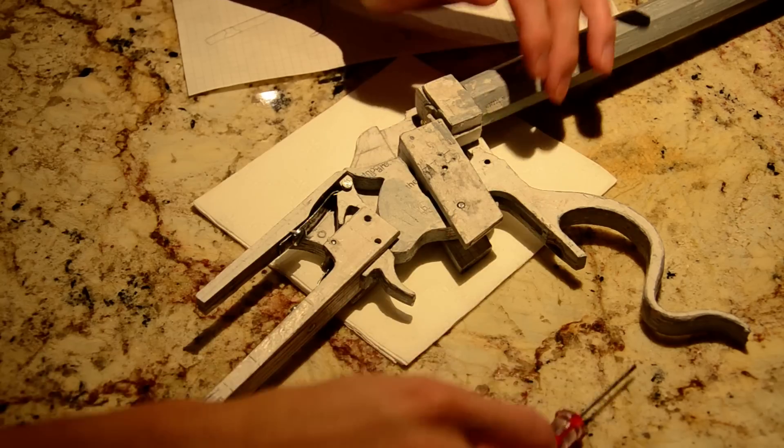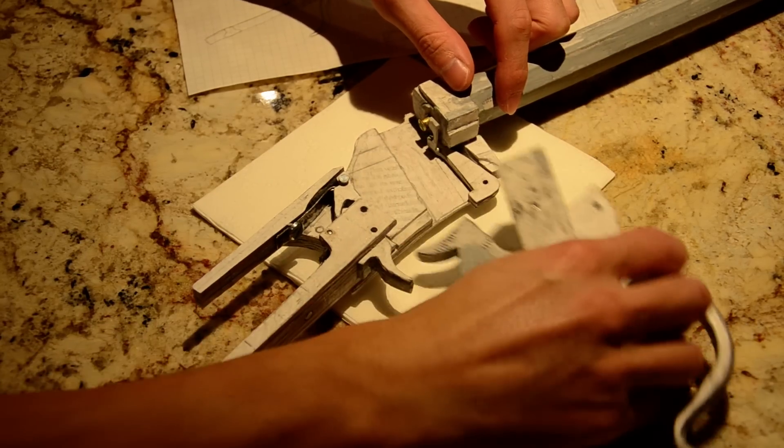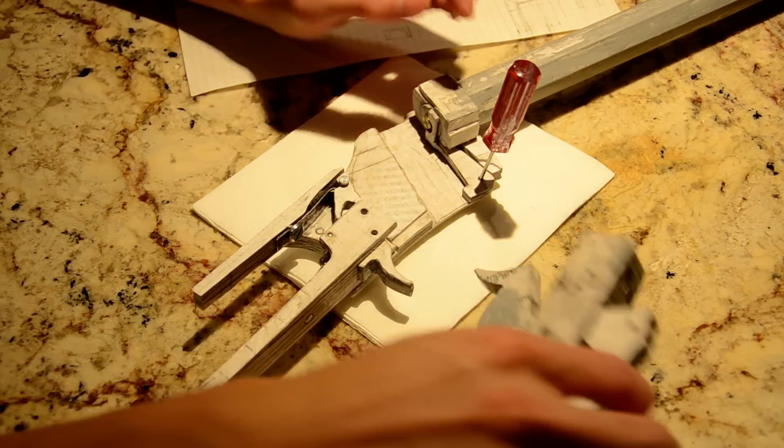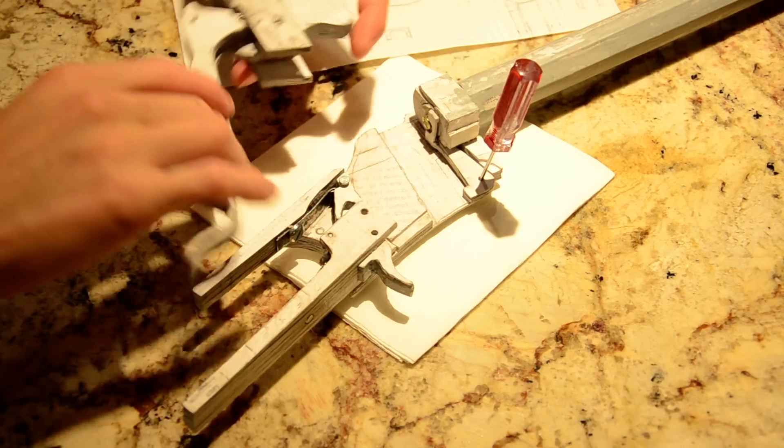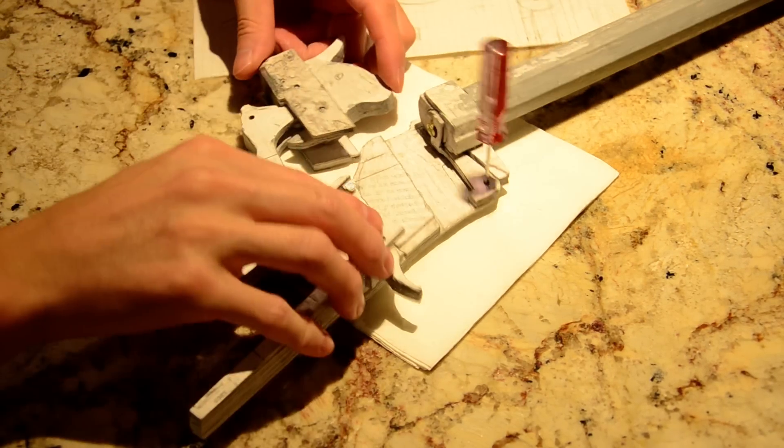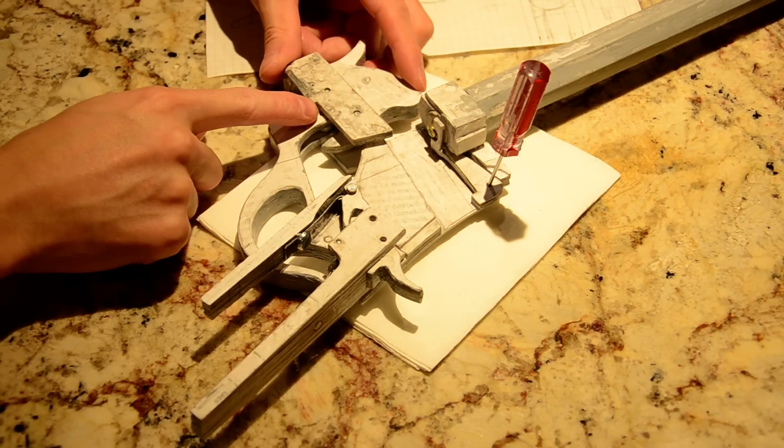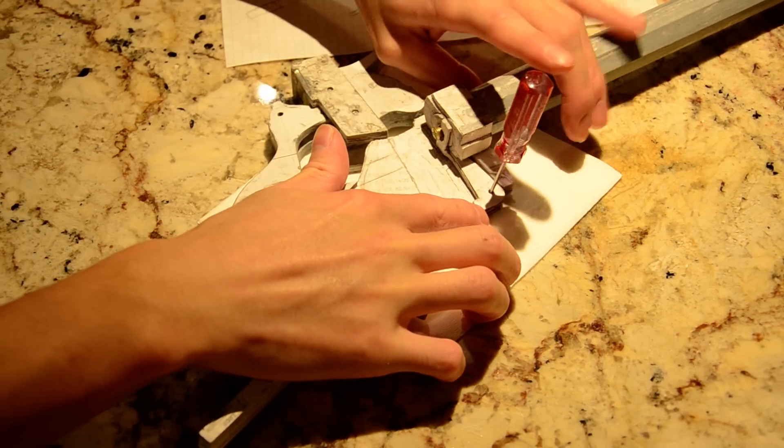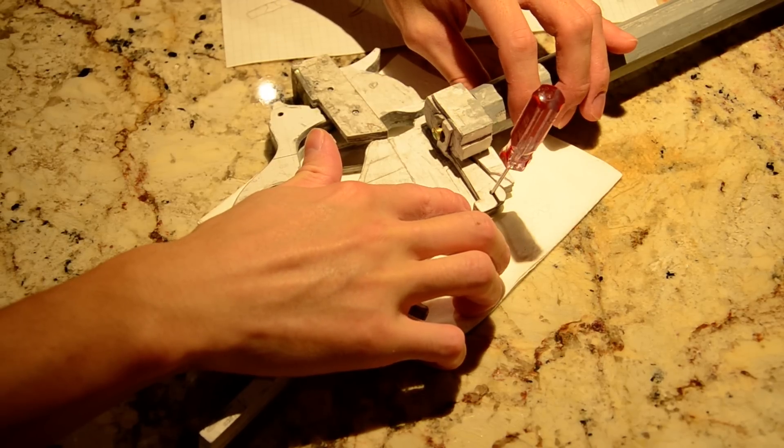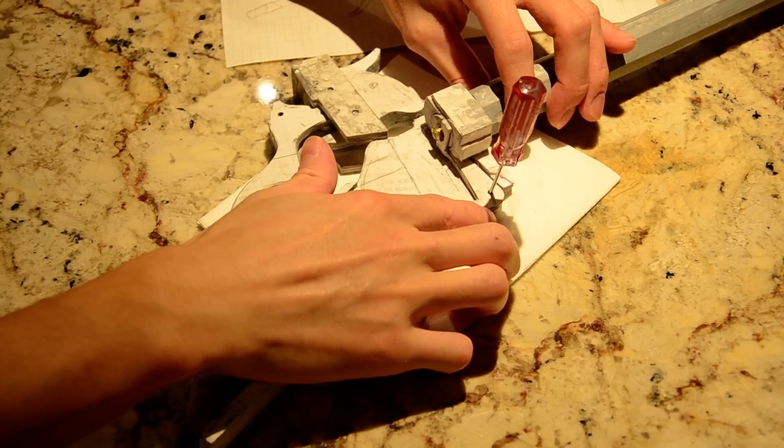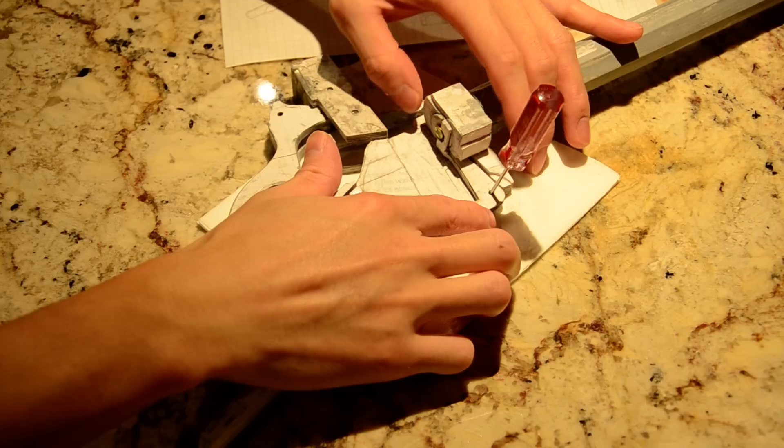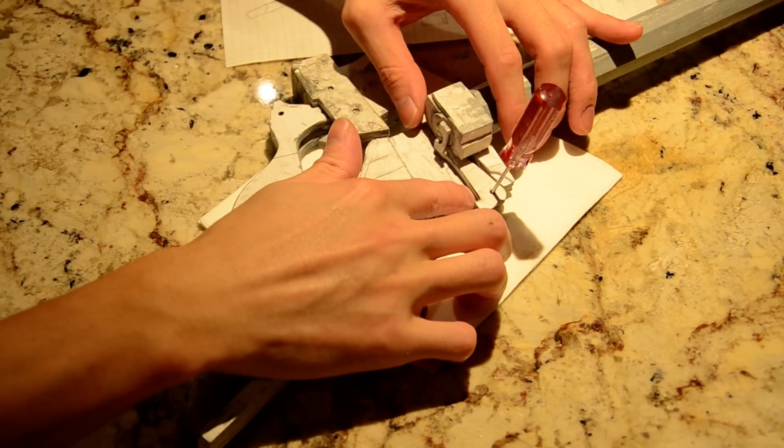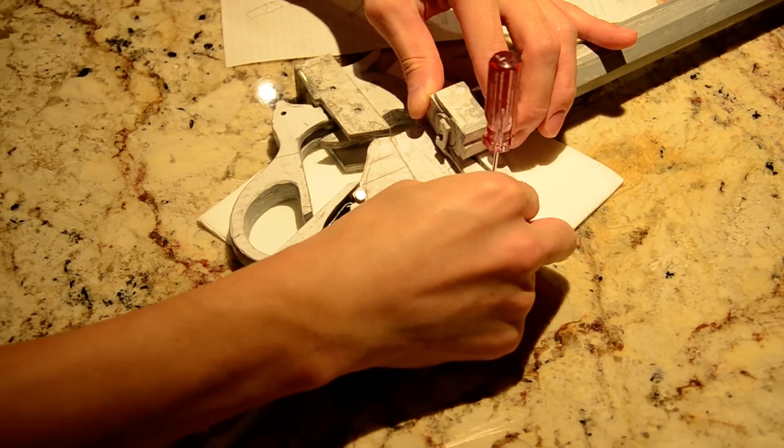And the way that works is you have this cut out portion, or the breech block, which tilts or hits the notch on the extractor. And so when that hits, it basically levers itself out. Like that.